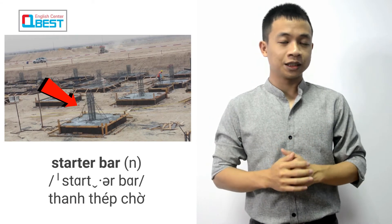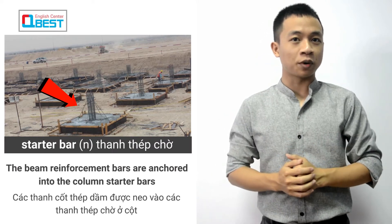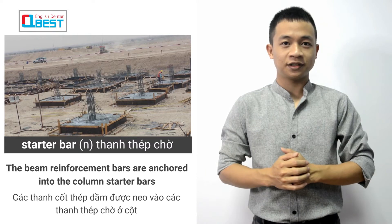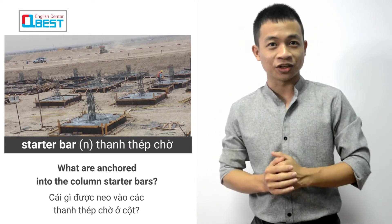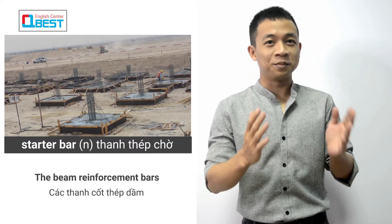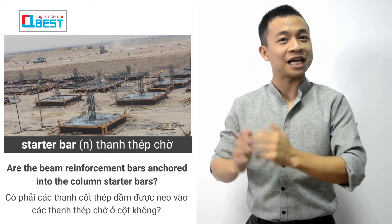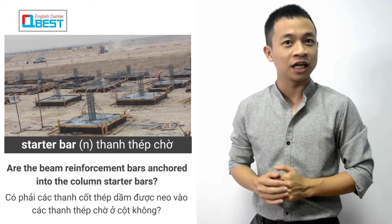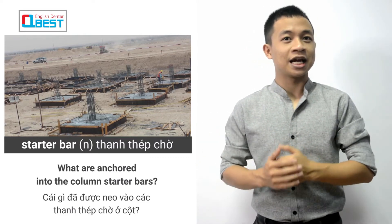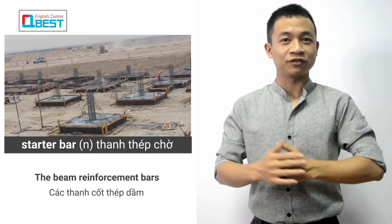Starter bar. The beam reinforcement bars are anchored into the column starter bars. What are anchored into the column starter bars? The beam reinforcement bars. Are the beam reinforcement bars anchored into the column starter bars? Yes, that's right. So what are anchored into the column starter bars? The beam reinforcement bars.